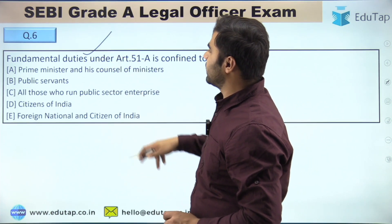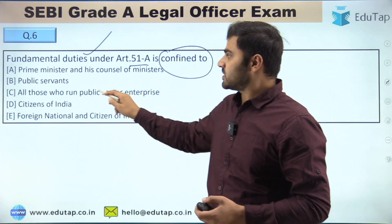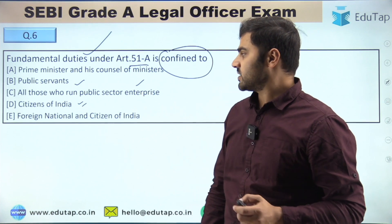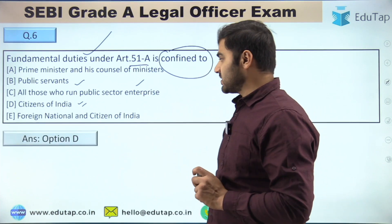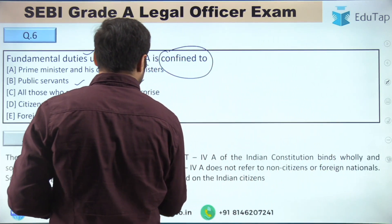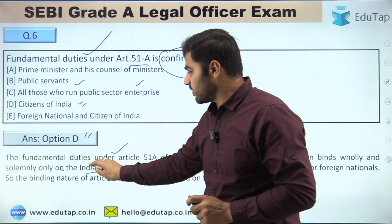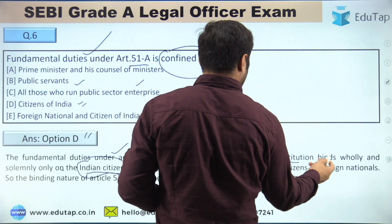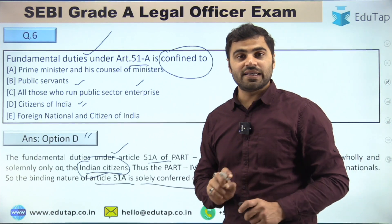Question number 6: Fundamental duties under Article 51A are confined to which of the following? Options are: Prime Minister and his council of ministers, public servants, all those who run public sector enterprises, citizens of India, or foreign nationals and citizens of India. The right answer is option D — citizens of India. The fundamental duties under Article 51A of Part 4A bind only Indian citizens. Part 4A does not refer to non-citizens or foreign nationals; the binding nature of Article 51A is solely conferred on Indian citizens.